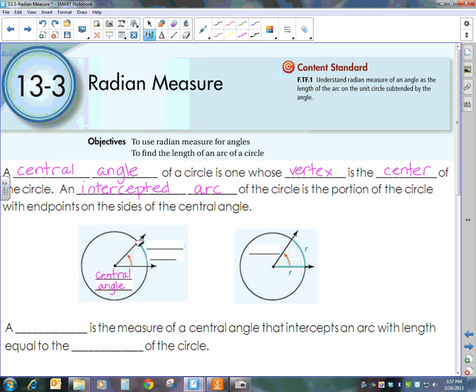And then the intercepted arc is basically that part of the circle that's been cut off by that angle. So this is our intercepted arc.